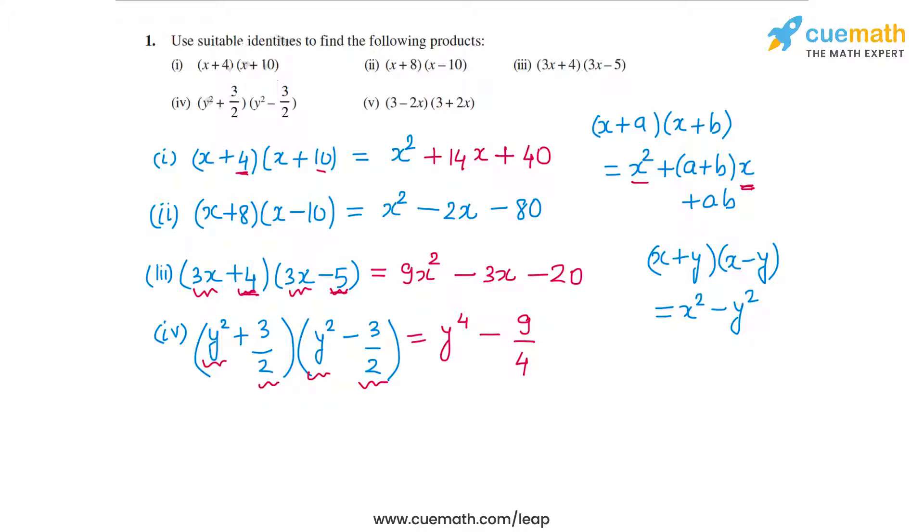In the fifth part, I have (3 - 2x)(3 + 2x). Again, this is of the form (x + y)(x - y), so in this case the product will be 3², that's 9, minus (2x)², so that's 4x². This is the product in the fifth part.